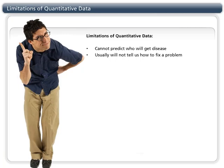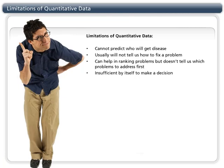It can help in ranking problems, like disease burden or risk factor prevalence, but doesn't tell us which problems to address first. By itself, it is insufficient evidence to make a decision.